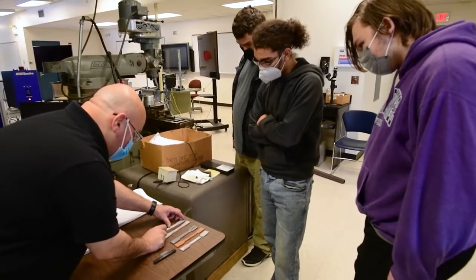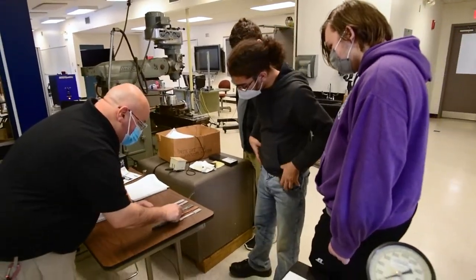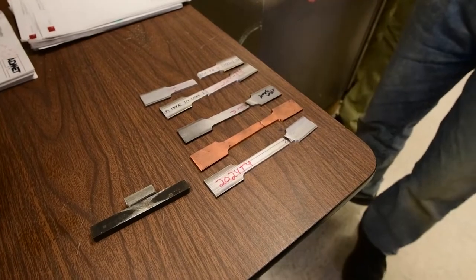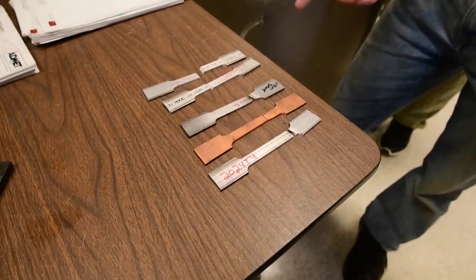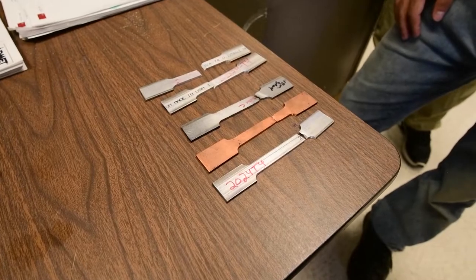These samples right here show the difference between aluminum, stainless steel, low-carbon steel, carbon fiber, and you can see how this machine stretched them, and how much they stretched when they broke.